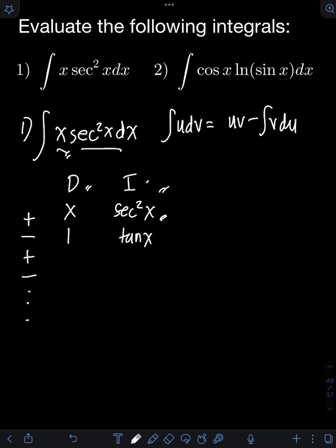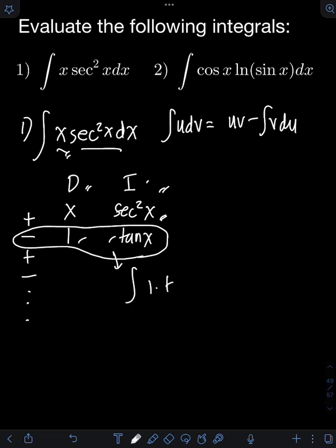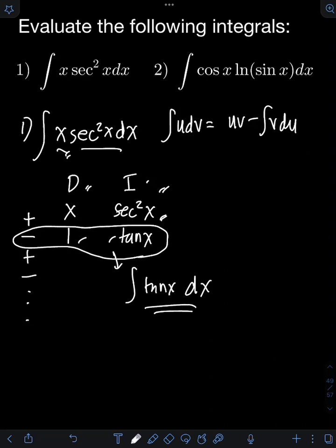When do we stop differentiating and integrating? If we notice that the product of the terms in the last row can be integrated, that's when we stop. The product of the terms in the last row is 1 times tan x, which is just tan x, and we can evaluate the integral of tan x dx already. That's the third case for stopping when using the DI method.